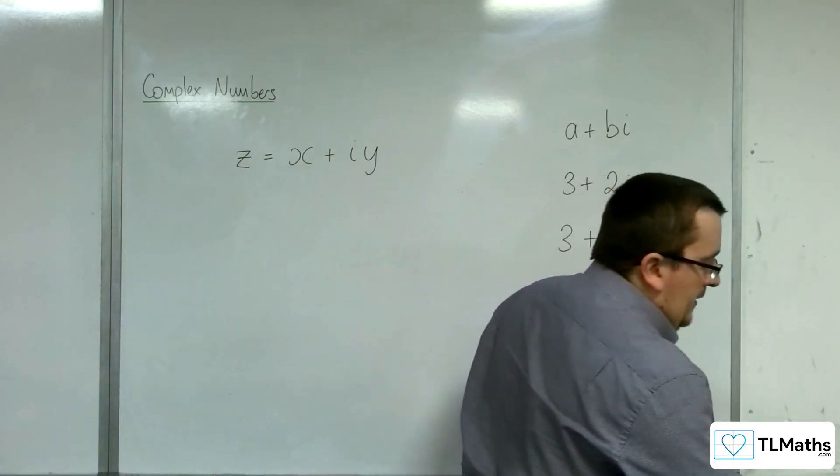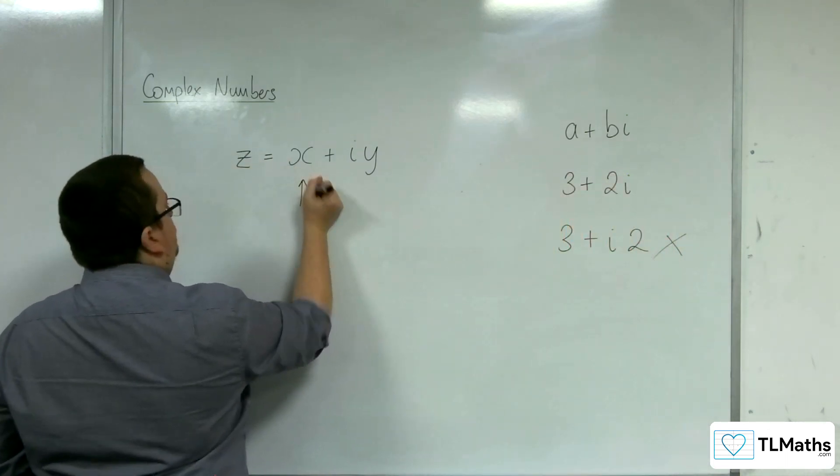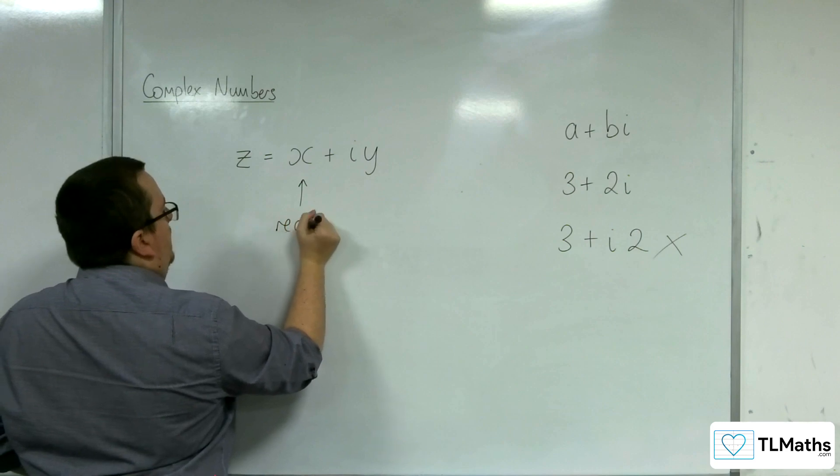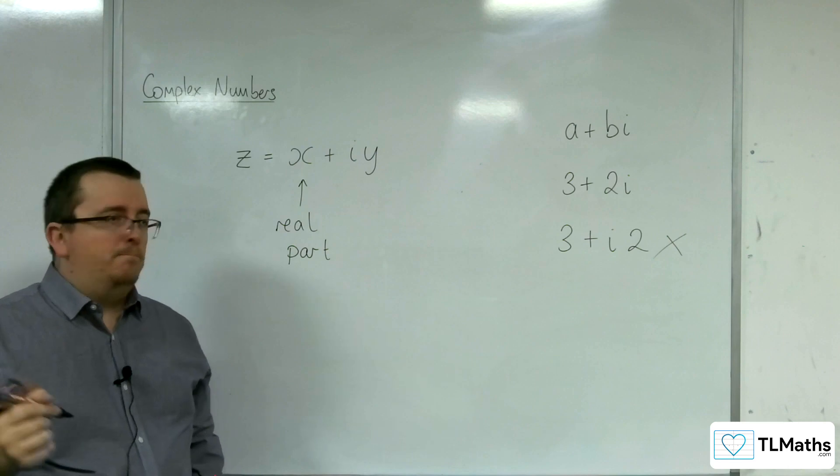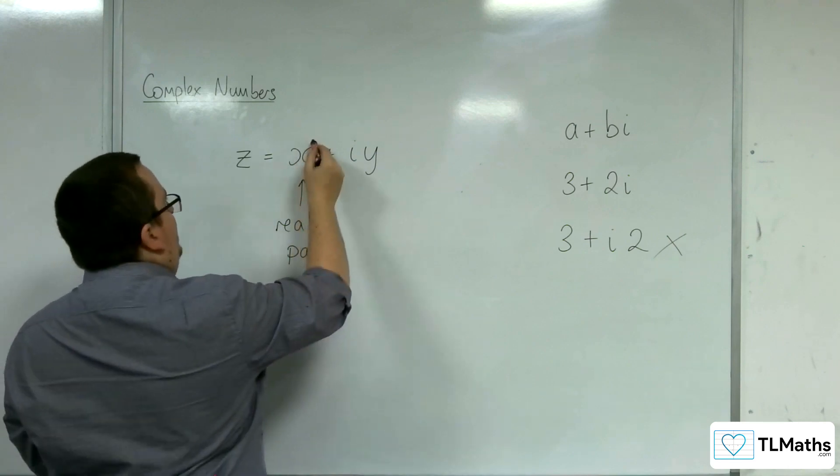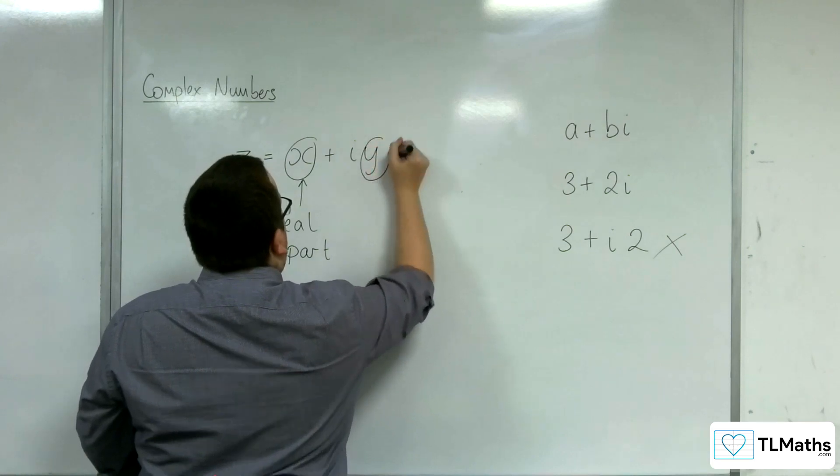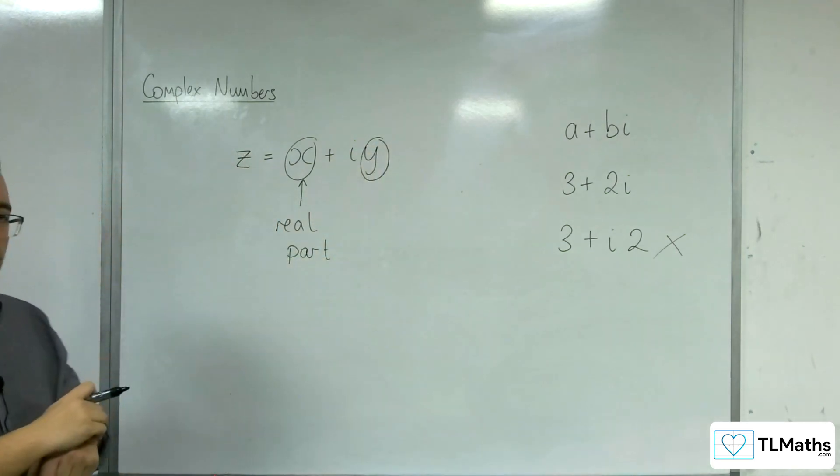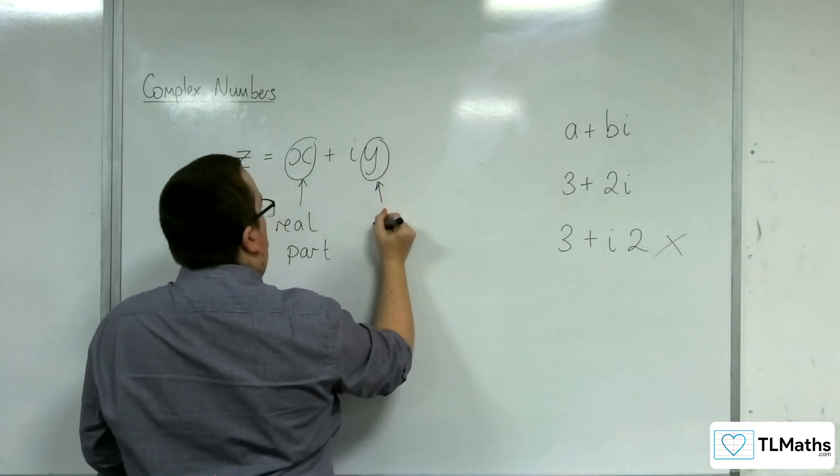So what are these x and y? So the x we refer to as the real part of the complex number z. Okay. So that is the x. The imaginary part is the coefficient of i. So the value of y here.